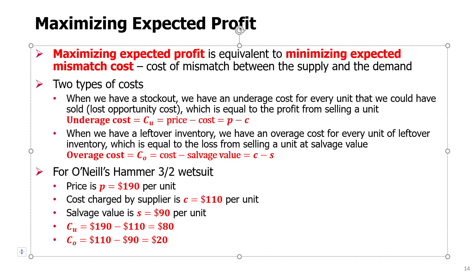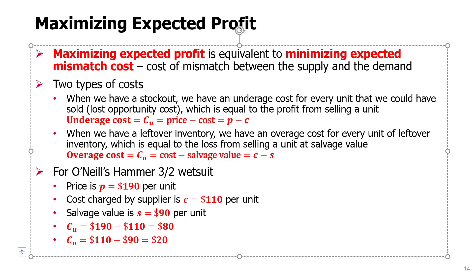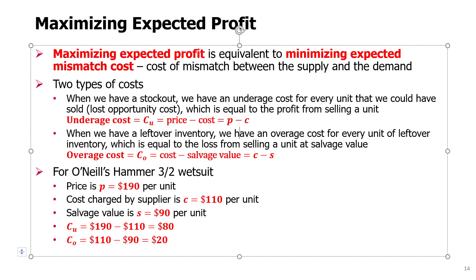An underage cost is a lost opportunity from selling an extra unit. In our case, this is going to be the same value as the profit from selling a unit. So if we sell a unit, we sell it for price P and we pay for it at cost C. If we run out of units — if we have a stockout — for each unit that we are short, we experience a lost opportunity cost equal exactly to the profit from a sold unit.